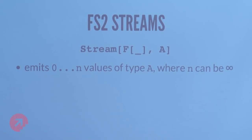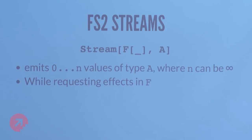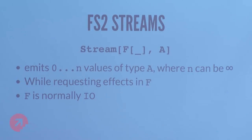During the emission of these values, a stream will request effects in F. The F there is generally IO — it's describing the action of emitting things when emission requires some effect, like reading from a file, printing to a file, reading from a queue, or mutating some state. This is still completely pure; it's just another description of things. I like to keep F abstract in most of my code, but for simplicity I'll only use IO in the slides. There are also cases where you want something not as powerful as IO — do-be-connection IO is an example.